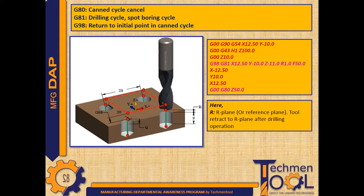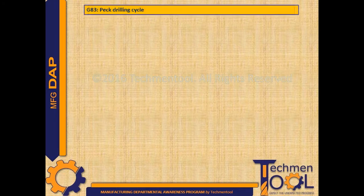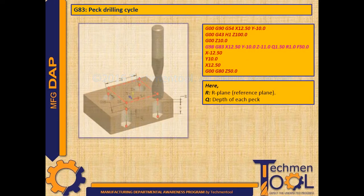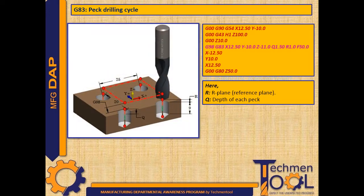After the drilling cycle, G80 code cancels it and G98 code returns the tool to the initial point. G83 is used for peck drilling cycle. In this sample program, after the rapid movements as per instructed positions, the peck drilling cycle starts along with the position X12.5 Y-10 Z-11 along with Q value 1.5 at the feed rate of 50 microns. Here R is the R plane or reference plane, and Q is the depth of each peck. After the drilling cycle, G80 cancels it and G98 returns the tool to the initial point.